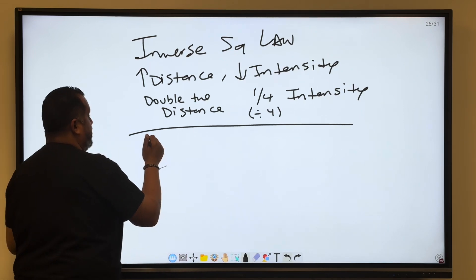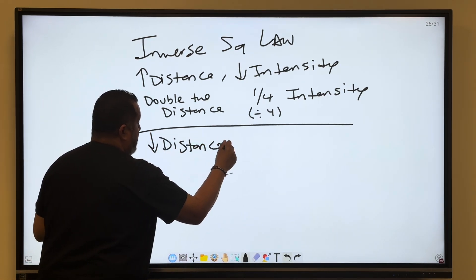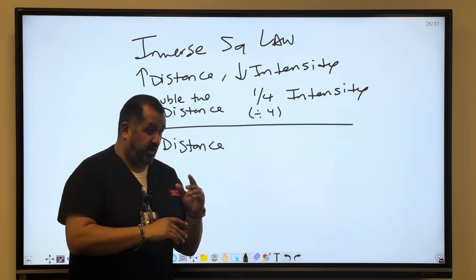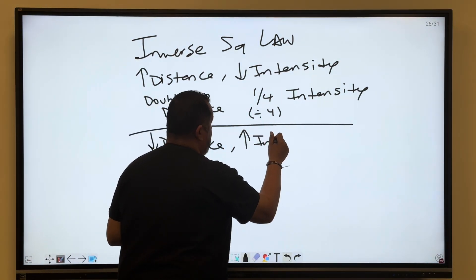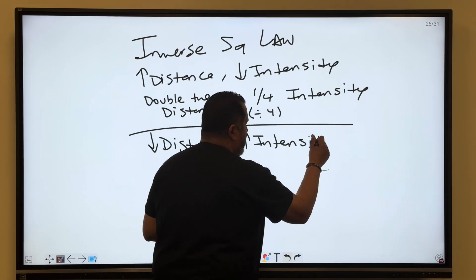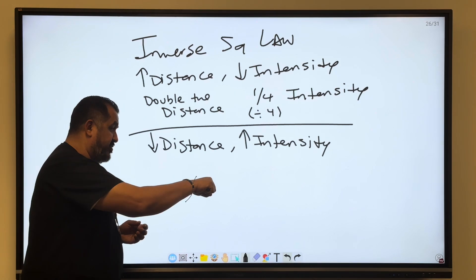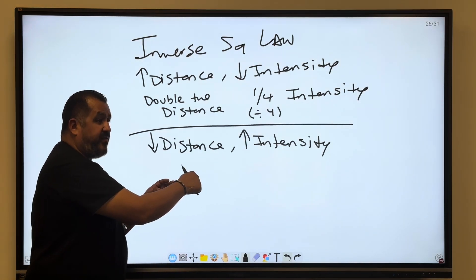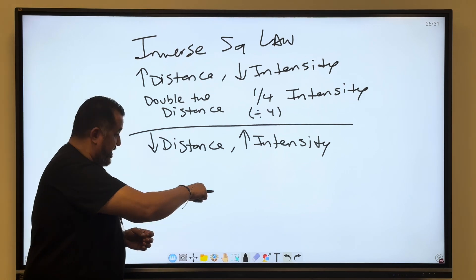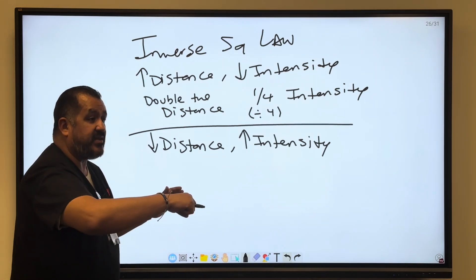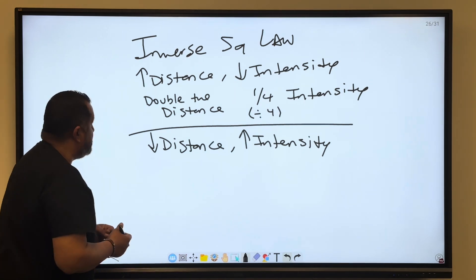The opposite is true. If you were to go down in distance, what's going to happen to the intensity of energy? It's going to go up because they're inversely related. One of the examples that we use is the flashlight. If I were to have a flashlight and I brought it closer to the board, the field is going to get smaller but the intensity of the light is going to increase.